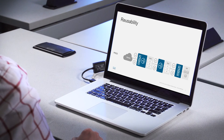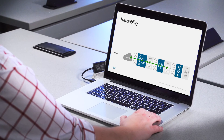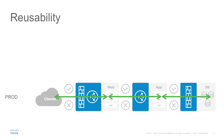Looking at the full application profile, we can see what the traffic flow will be. Clients or end users will be in an EPG of their own, with a contract set up between them and the web EPG. If the traffic is appropriate, it goes to a firewall for deep packet inspection, then to a load balancer to send traffic to multiple web servers in their own EPG. Traffic is then sent through a contract and load balancer to the app servers, and finally through a contract and a firewall to the database servers in the DB EPG. Then it can return because of the bidirectionality of contracts.